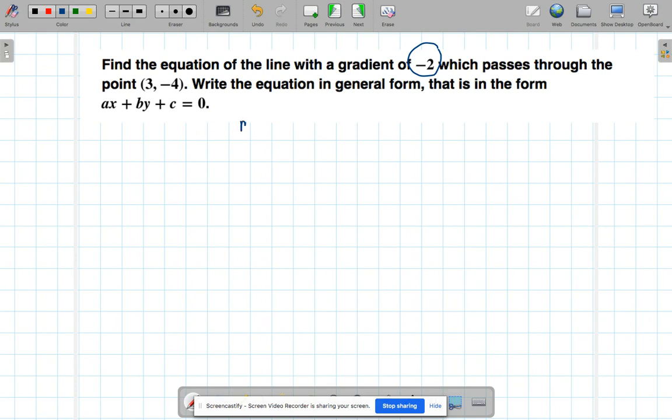I'm going to write down what I've got in the question: m = -2, and we've got our point which is (3, -4). So 3 is my x₁ and -4 is my y₁. So here we go with the formula that I talked to you about in the previous question: y - y₁ = m(x - x₁). Okay, we've got our three things: we've got our m, our x₁, and our y₁.